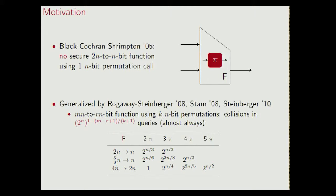In the table, I listed some example values of this bound. The focus in our work is on the simplest type of compression functions, namely those that map 2N to 1N bit. The bound states that if you want to get optimal collision security, you need to have at least three permutation calls. And this is the focus of our work.